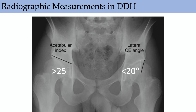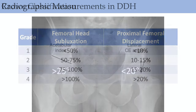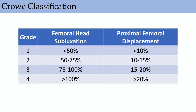The Crowe classification looks at femoral head subluxation and proximal femoral displacement. Crowe 4 is the worst, with the hip riding way up high and the femoral head in a pseudoacetabulum in the ilium. This has implications for total hip arthroplasty — bringing down the hip center and lengthening the leg.